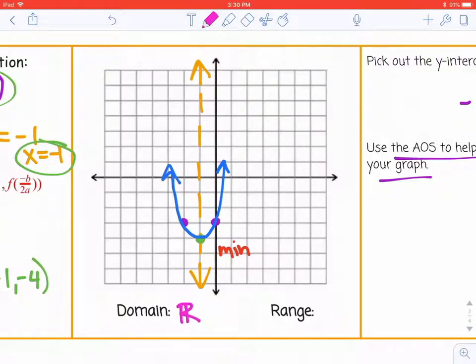Those little arrows mean it's going to continue to go to the left and to the right. That's why it's all real numbers for domain.